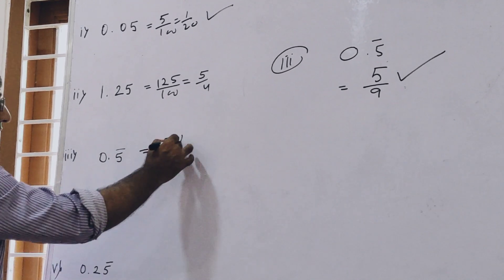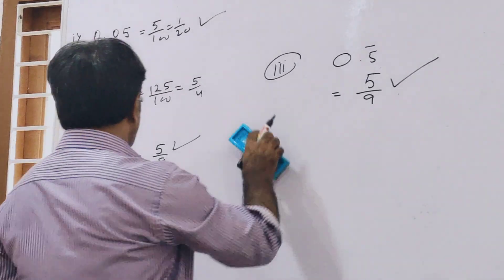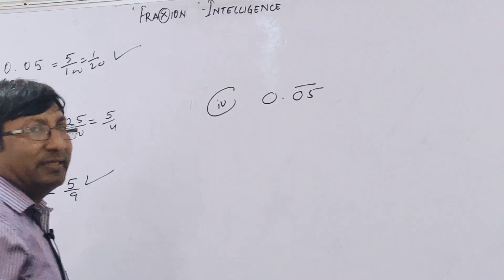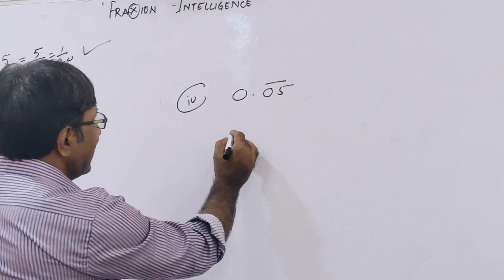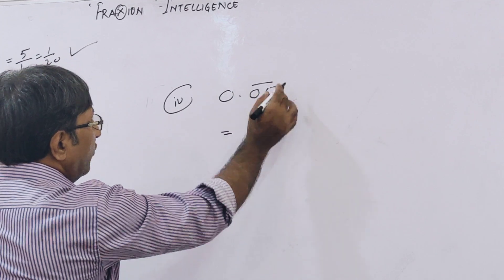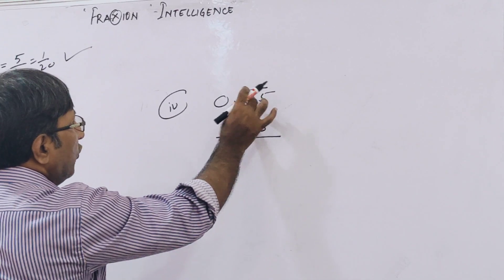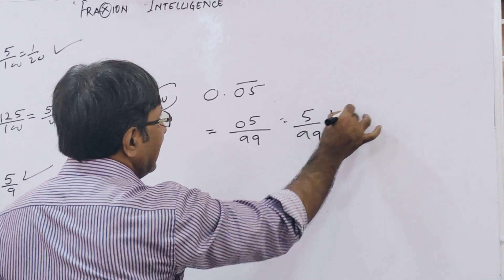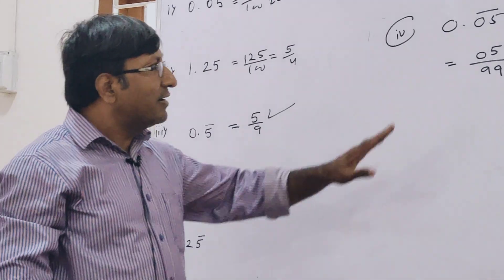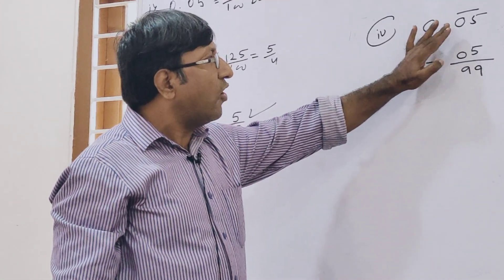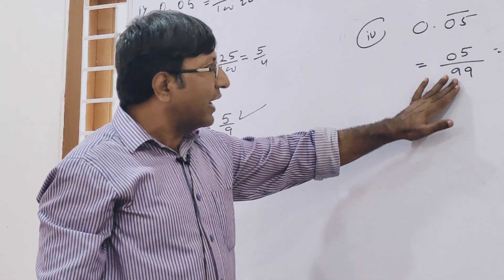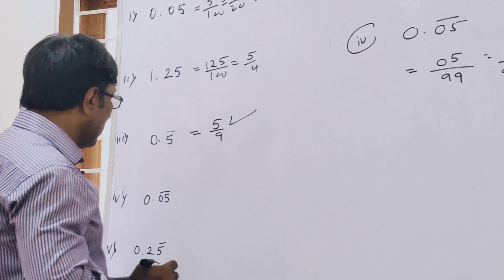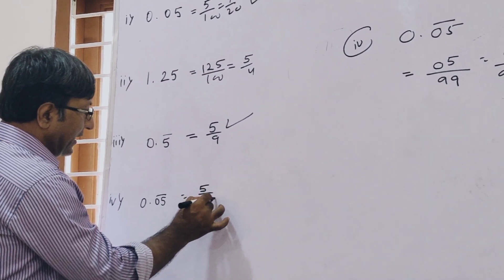In the same way, the fourth question is 0.05 bar — both digits have a bar. The process is the same: write the digits after the decimal, which is 05, meaning only 5. There are 2 digits with a bar, so place 2 nines. So 5 by 99 is the correct answer. Write the numbers after the decimal — how many digits have a bar, divide by that many 9s. So 5/99 is the answer.